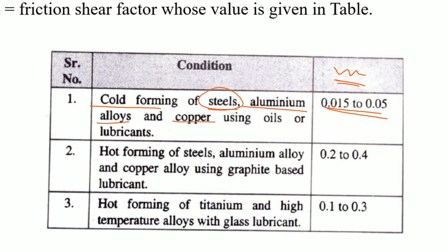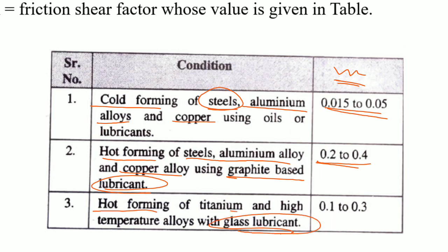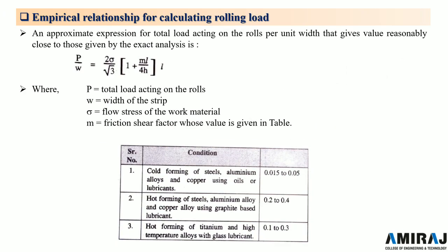For cold forming of steels, aluminum alloys, and copper, M ranges from 0.015 to 0.05. For hot forming of steel, aluminum alloy, and copper alloy using graphite-based lubricants, M is 0.2 to 0.4. For hot forming of titanium and high-temperature alloys with glass lubricants, M is 0.1 to 0.3. These are the various values for the friction shear factor.